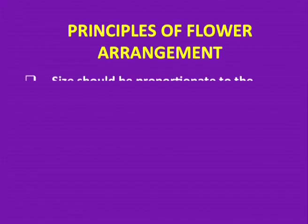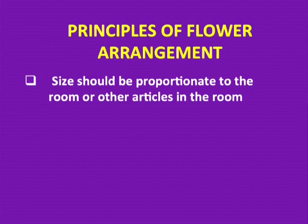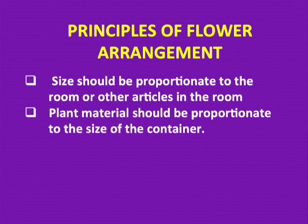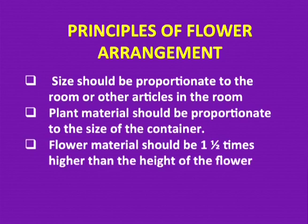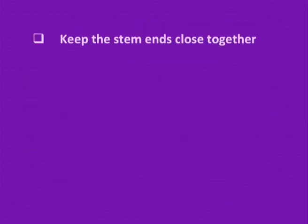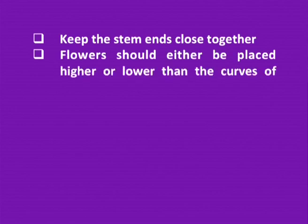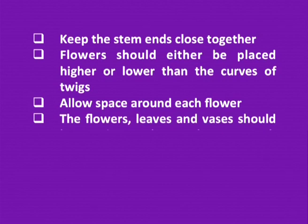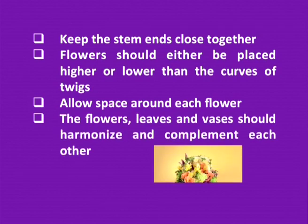We shall discuss the principles of flower arrangement. Size should be appropriate to the room or other articles placed in the room — there should be a uniform balance maintained. Size should be appropriate to the size of the containers. Flower material should be 1.5 times higher than the height of the flower vase. The whole arrangement should look balanced. Keep the stem ends close together. Flowers should be placed higher or lower than the curves of twigs, and allow space around each flower. The flowers, leaves, and vases should harmonize and complement each other.